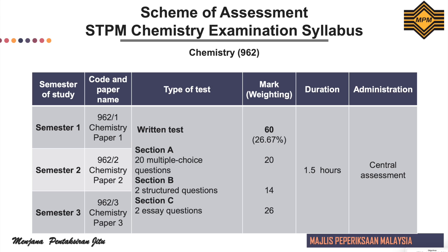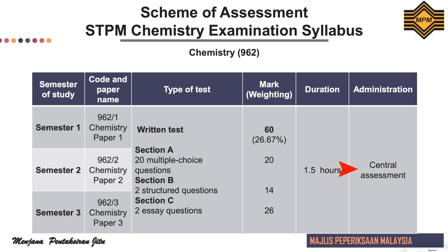Next, we move to the scheme of assessments. At the end of each semester, there will be a written test. This test consists of three sections: Section A consists of 20 multiple choice questions which carries 20 marks. Section B consists of two structured questions which carries 14 marks. Section C consists of two essay questions which carries 26 marks. The candidates must answer all the questions. The total mark for each paper is 60 marks, which carries 26.67%.